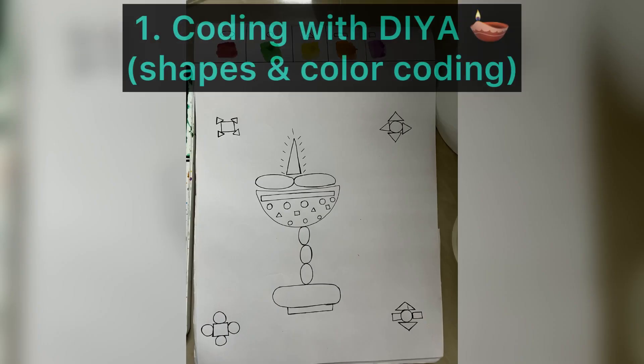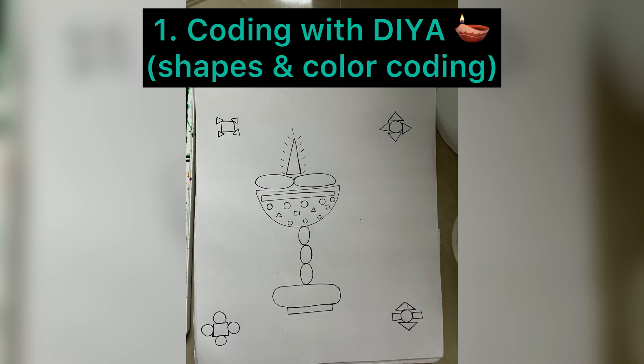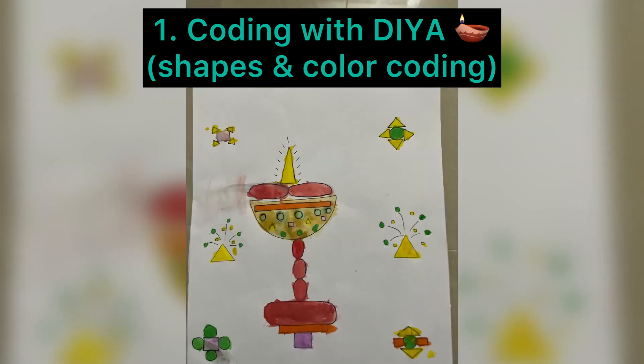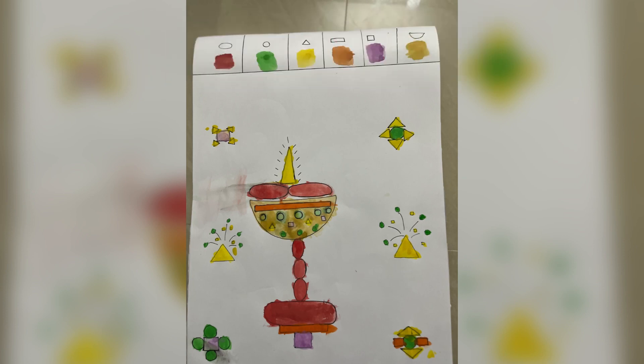In this video, we will see 5 Diwali activities. The first one is Coding with Diya. Diya is the shape switch, and I assign one shape to one color. If I show the shape, Diya is the shape.